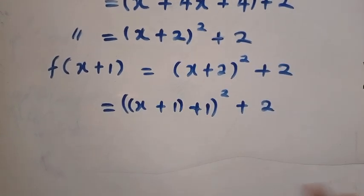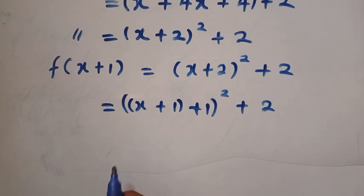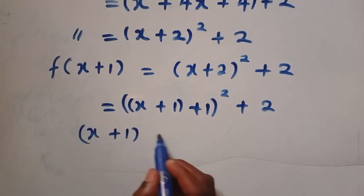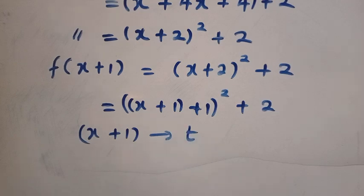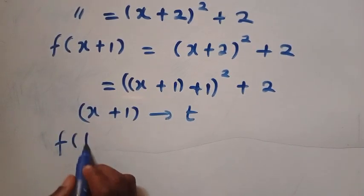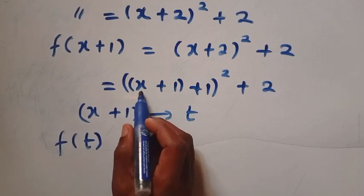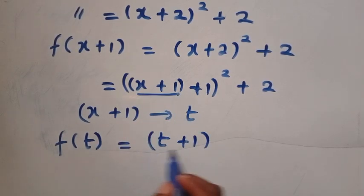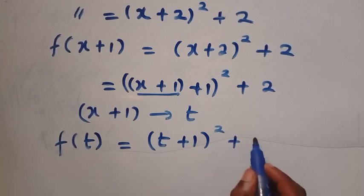Suppose I replace x plus 1 with t. For instance, if I replace x plus 1 with t, then the first one here becomes f of t, because this is x plus 1, it becomes t plus 1 in the bracket, all squared, then plus 2.